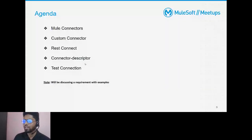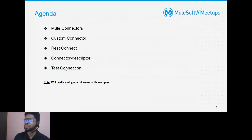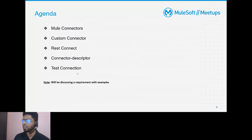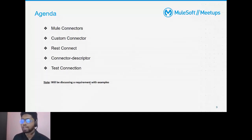We were discussing the connector descriptor, which is part of the REST Connect approach. For different connectors, we'll have a test connection method defined. We'll learn about how we can implement test connection for our custom connector, what the advantage is when doing it, and we'll also discuss requirements with examples.